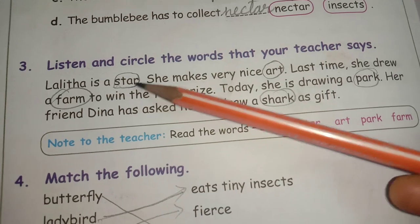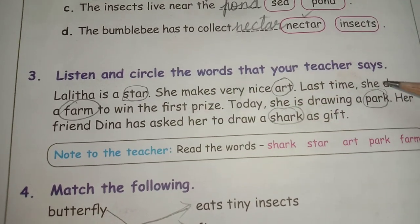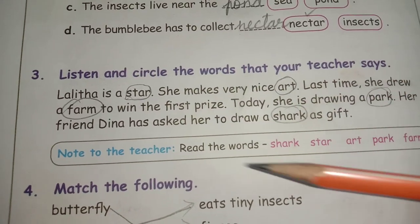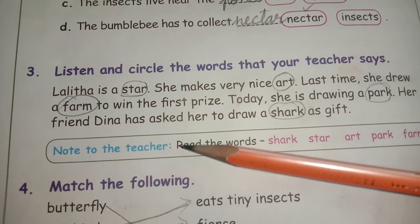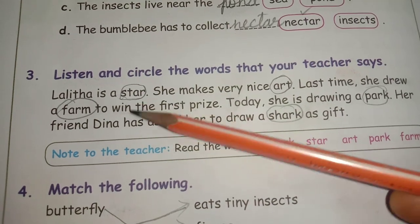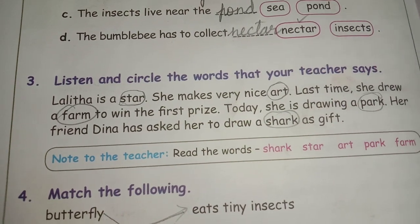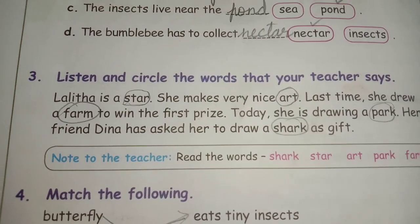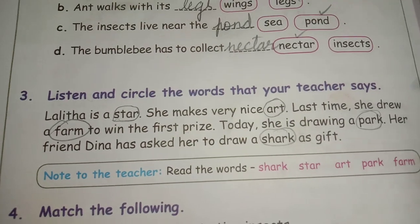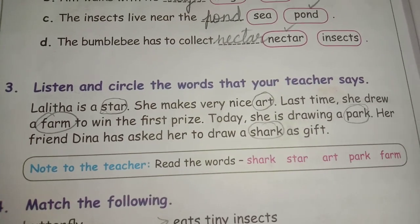See the next one: listen and circle the words that your teacher says. The words are given in the bracket above and you should see that and circle it. Whatever the teacher says, you can circle it by seeing this paragraph.